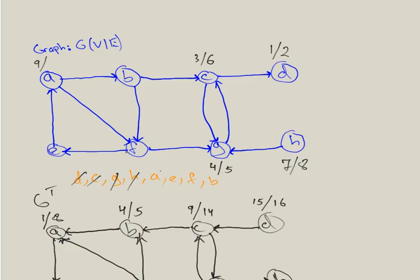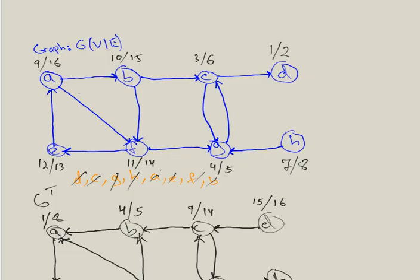A has outgoing edges to B and F — we can go to either. We choose B, discovered at time ten. B has edges to C (already visited) and F (not yet visited), so F is discovered at time eleven. F has an edge to G (visited) and E (not visited), so E is discovered at time twelve. E has an arrow to A — already visited — and no other edges, so E finishes at time thirteen, F at fourteen, B at fifteen, and A at sixteen. We cross A, B, E, F off the list.